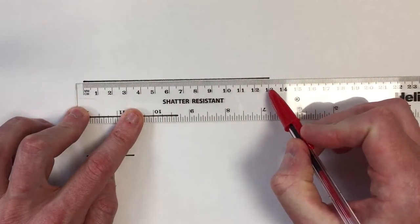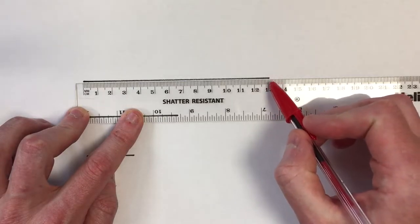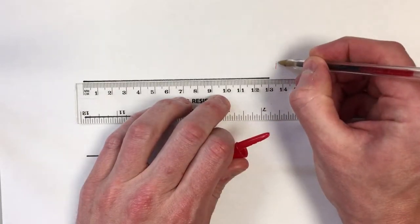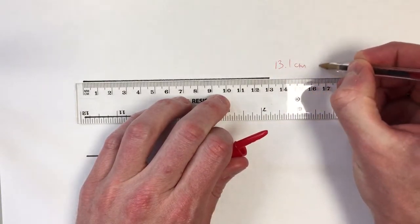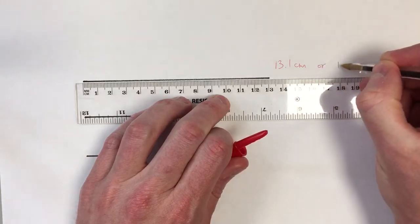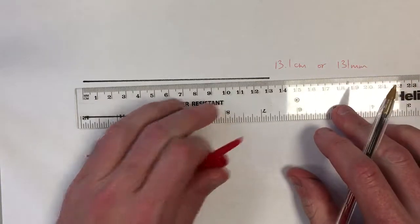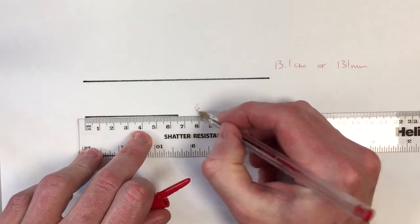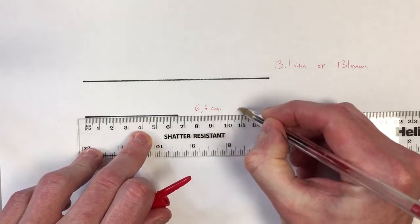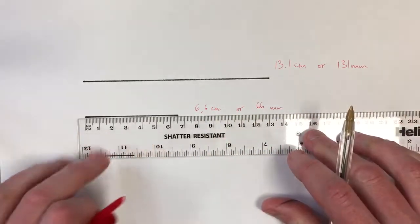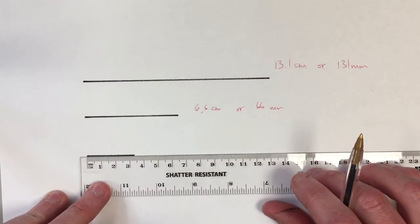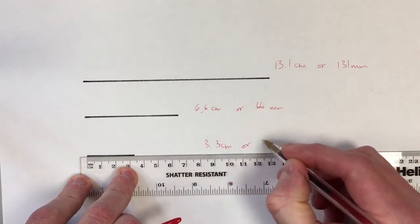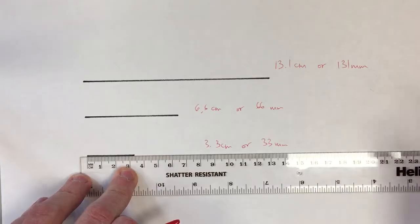We're just a little bit past thirteen centimeters. Our line goes to the first dash after thirteen centimeters, so this line is thirteen point one centimeters, or one hundred thirty-one millimeters. This one is six point six centimeters, or sixty-six millimeters. And this one is three point three centimeters, or thirty-three millimeters.